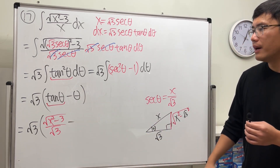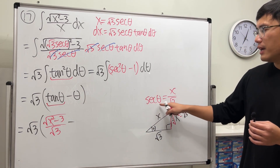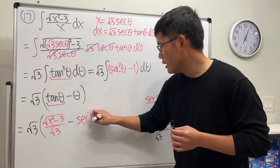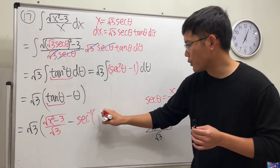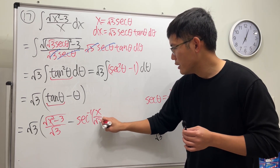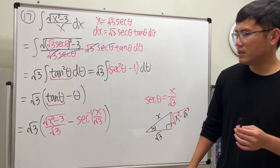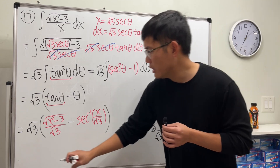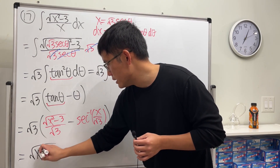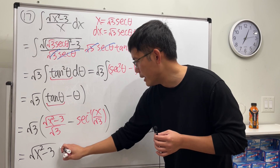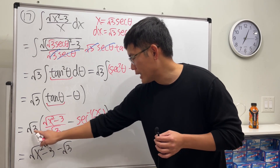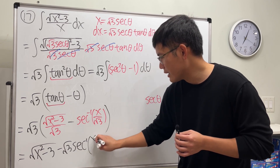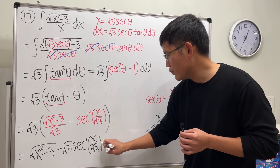For theta, we use the inverse: theta equals inverse secant of x over square root of three. The answer looks pretty involved, but distributing the square root of three out front gives us square root of x squared minus three, minus square root of three times inverse secant of x over square root of three, plus C. Do not cancel — this is our final answer.